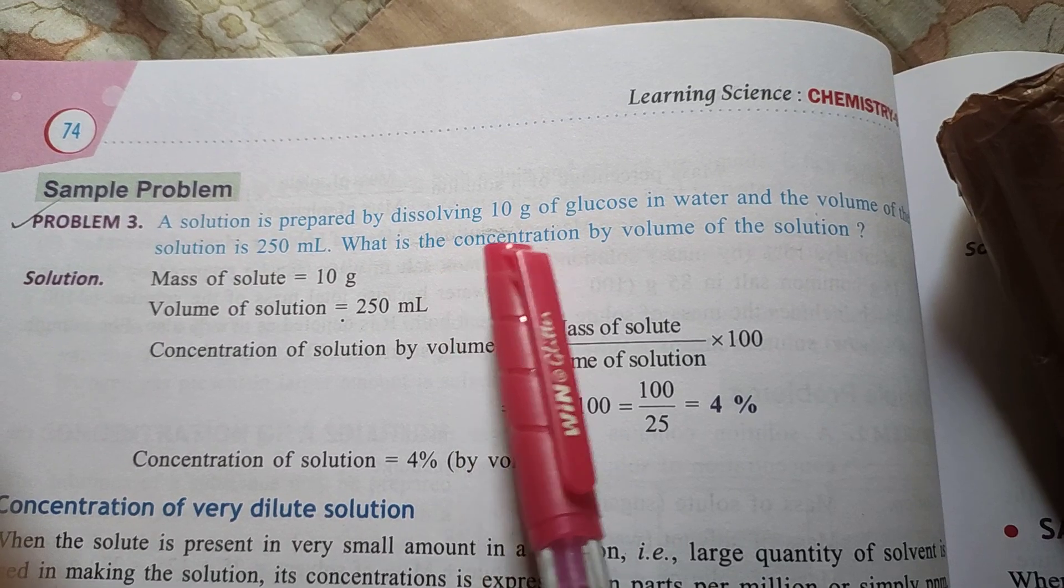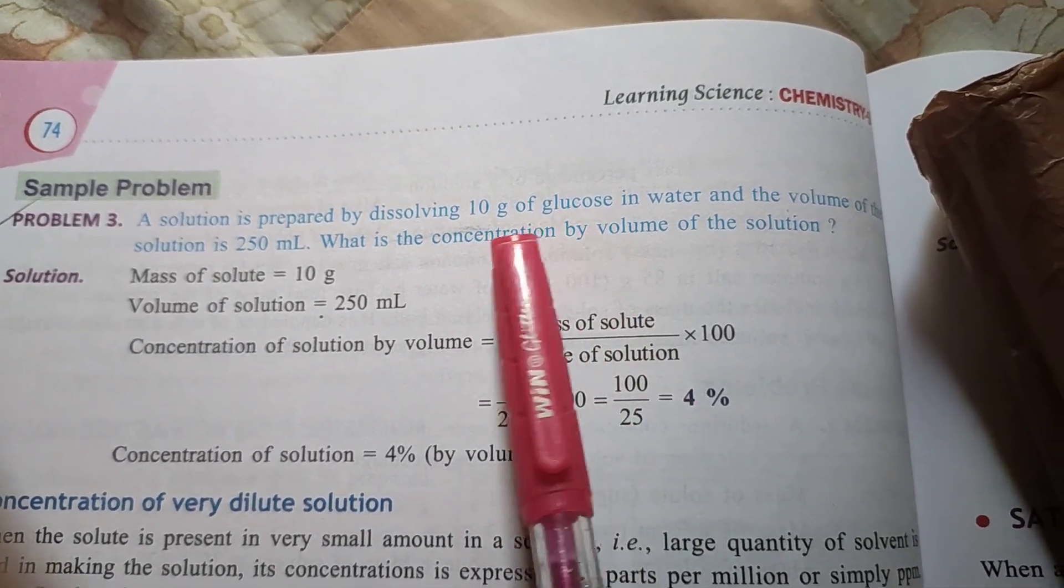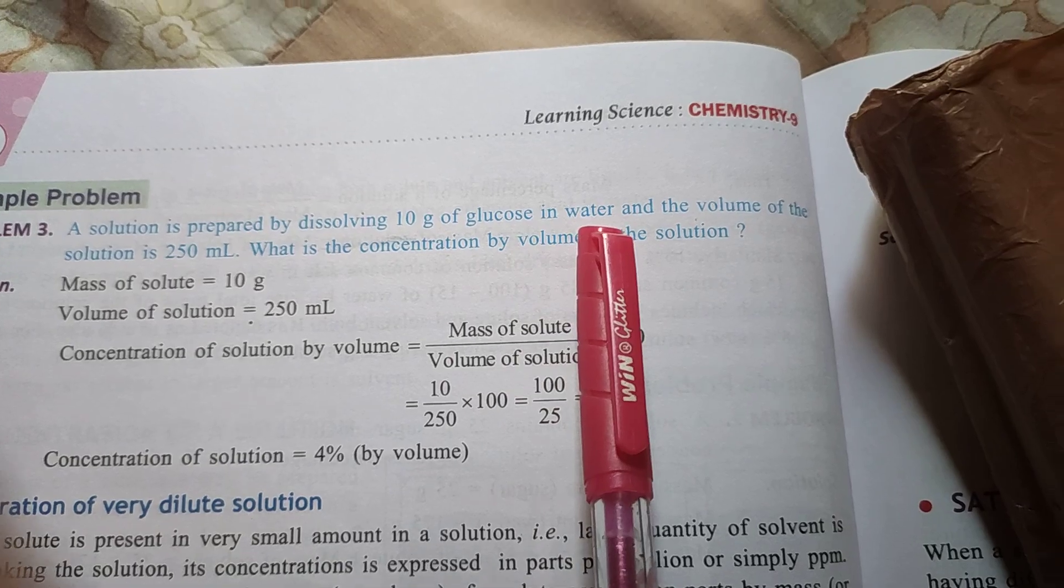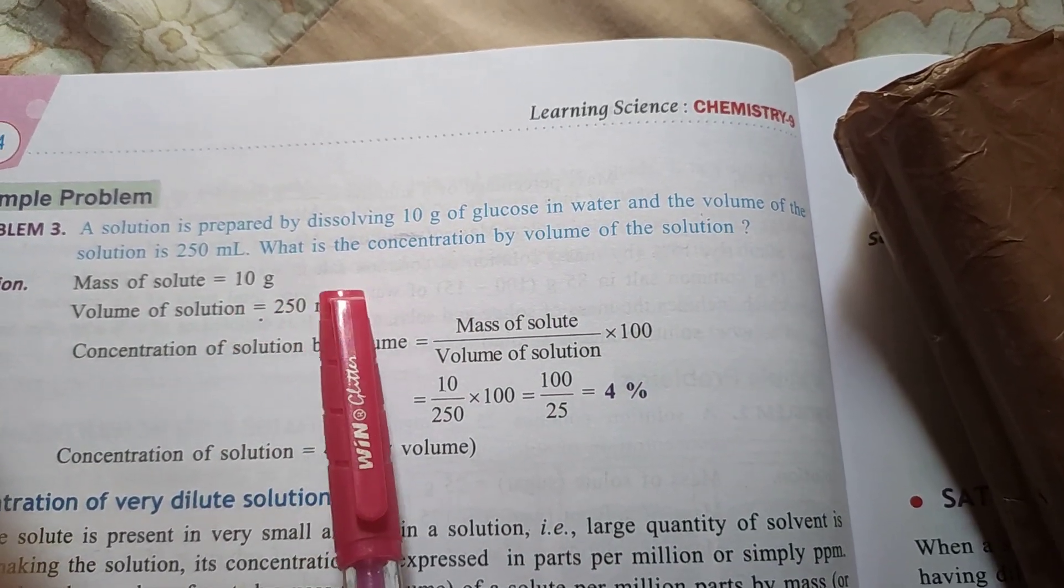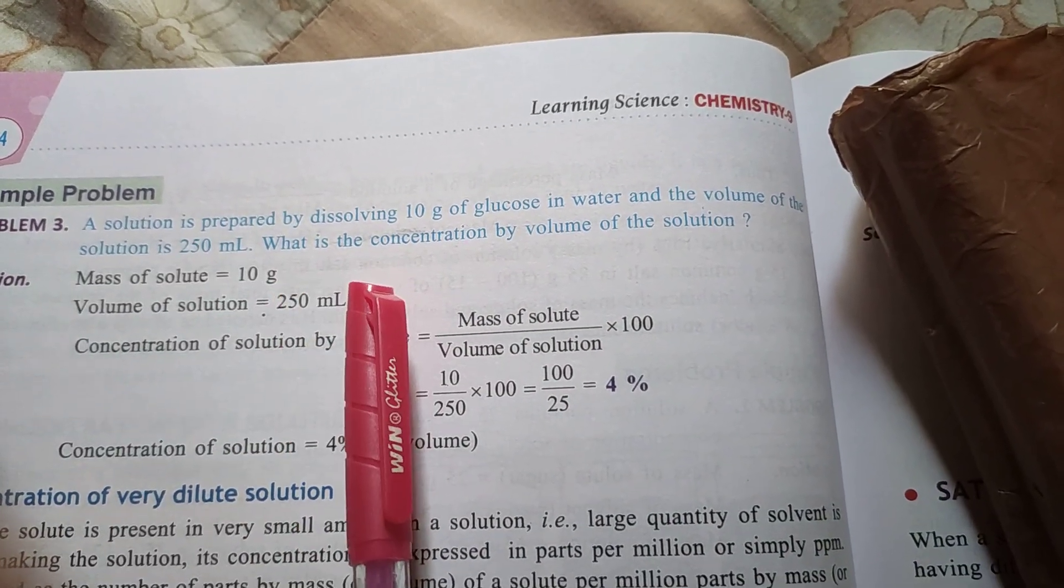We have another question. The question is: a solution is prepared by dissolving 10 gram of glucose (the 10 gram of glucose is a solute) in water, and the volume of the solution is 250 ml.